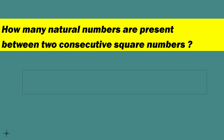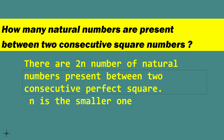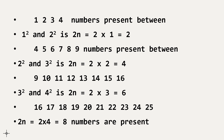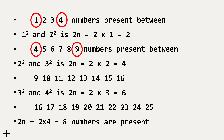How many natural numbers are present between two consecutive square numbers? The formula is 2n, where n is the smaller of the two numbers. For example, between 1 and 4 (squares of 1 and 2), there are 2×1 = 2 non-square numbers (which are 2 and 3). Between 4 and 9, there are 2×2 = 4 non-square numbers (5, 6, 7, 8). Between 9 and 16, there are 2×3 = 6 non-square numbers.